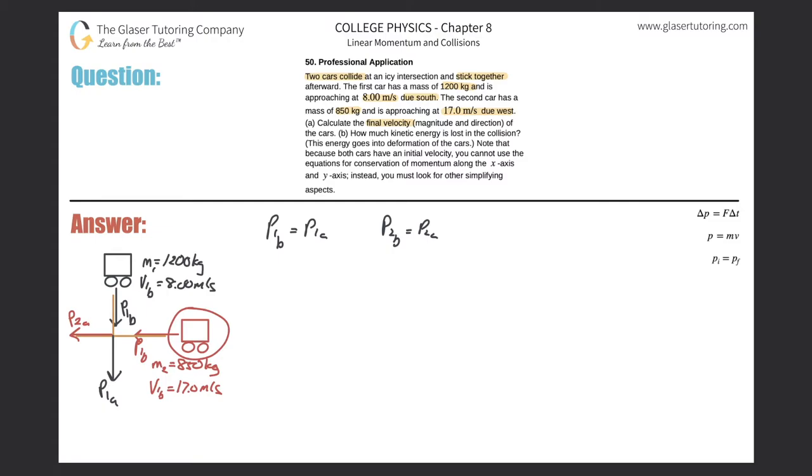So what is P1B? Well, P1B is, we know the mass and we know the velocity before the collision. So I can just break this up into M1V1B, and that should equal M1V1A. And then similarly with the second vehicle, so it's M2V2B will equal M2V2A.